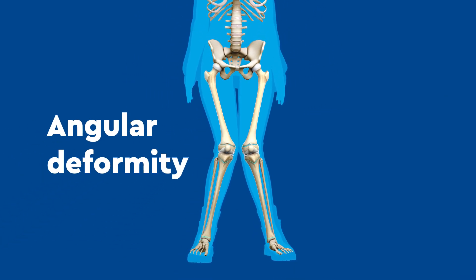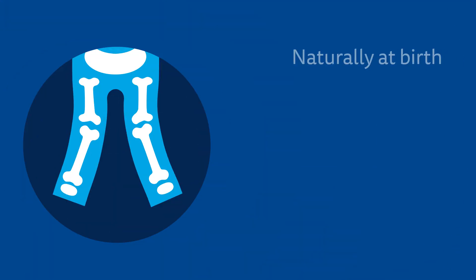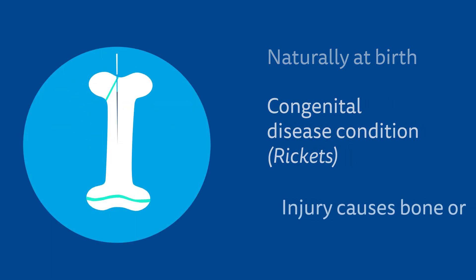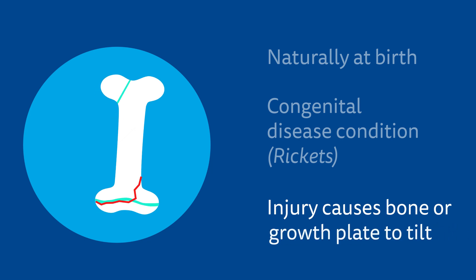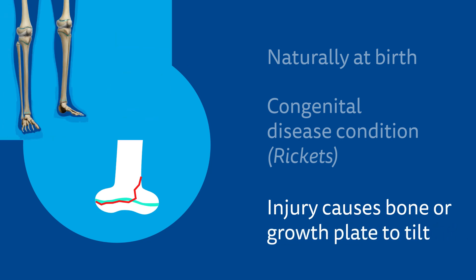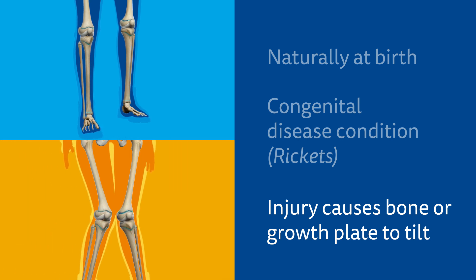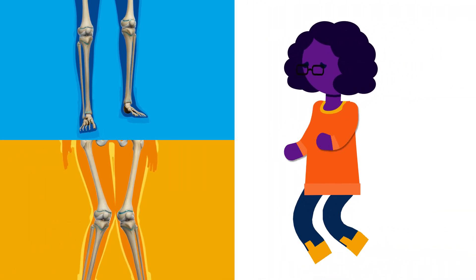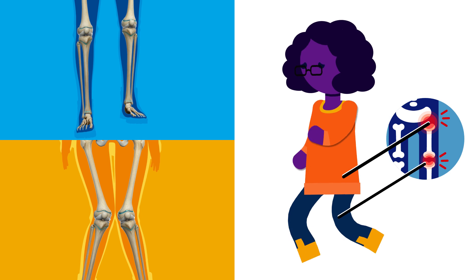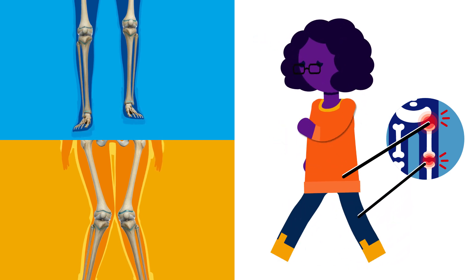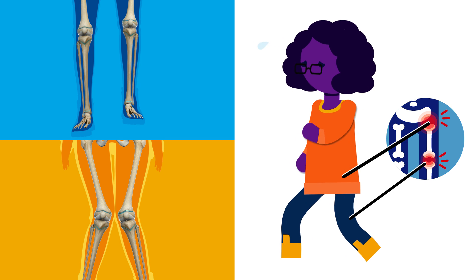An angular limb deformity can occur naturally at birth, as a result of a congenital disease condition like rickets, or after injury causes the bone or growth plate to tilt from its normal angle. Limb length discrepancies and angular deformities can affect your mobility, and over time can lead to joint problems or arthritis. Surgery can help protect your joints and correct these limb deformities over time.